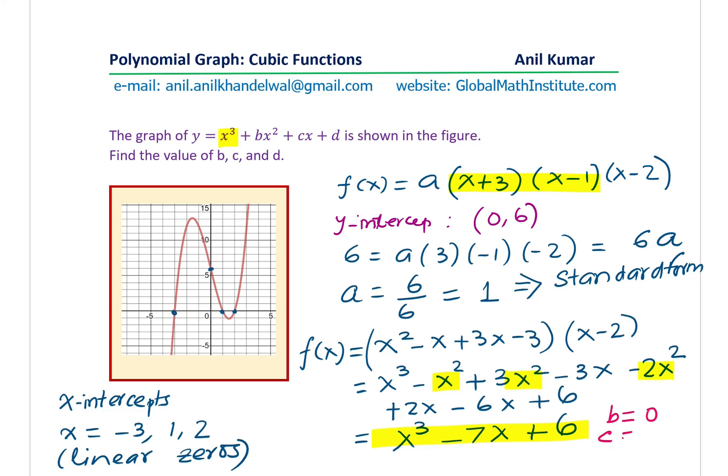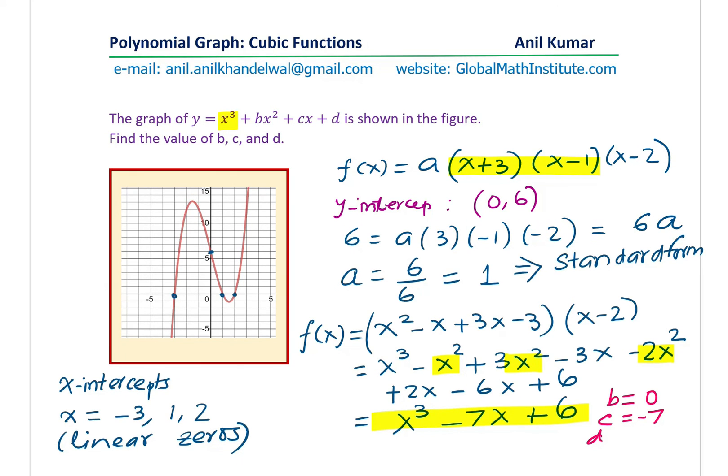The value of c, which is the coefficient of x, is minus 7. And the value of d, which is the constant in this case, is equal to 6.